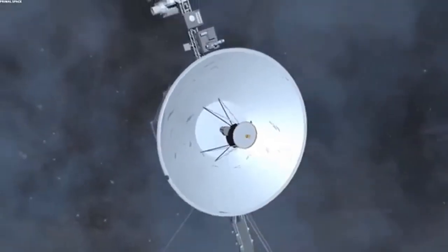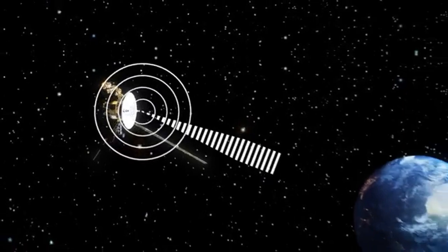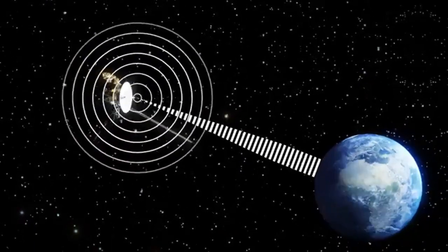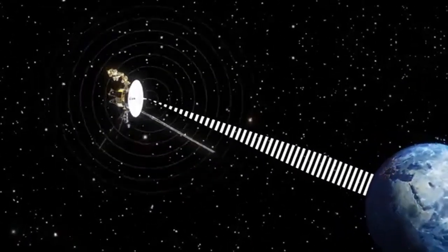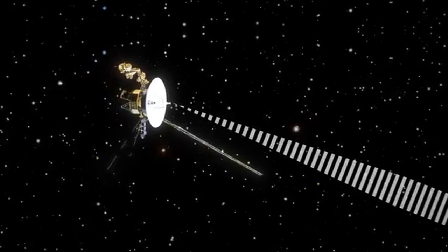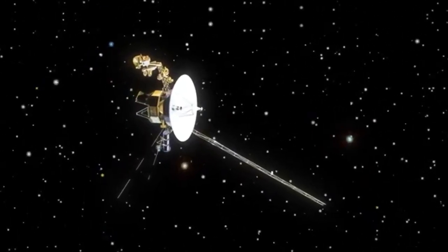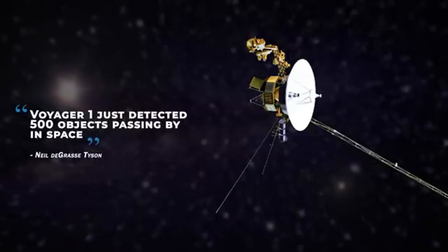One possibility is that the spacecraft's age is catching up with it. Voyager 1 was launched in 1977, so its circuitry is around 45 years old. It would make sense if the computers didn't work the same way, but this hasn't been the case so far.